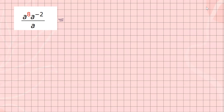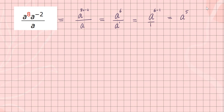From the top, these are multiplying so I keep the base a and add their exponents: 8 plus negative 2, all over a to the one power. Combining the exponents on top, 8 plus negative 2 is 6. So this is a to the sixth power over a. Finally, same base — I subtract their exponents. Suppose there is a 1 there, so top minus bottom: base a, 6 minus 1, which is simply a to the fifth power. That's the final answer.